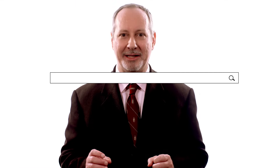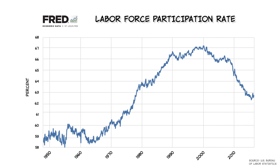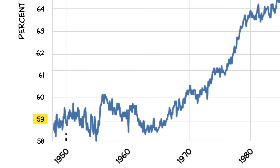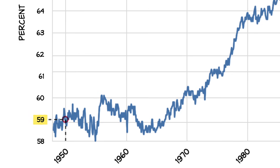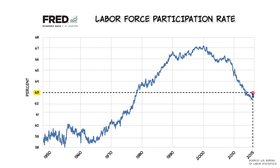If we Google 'labor force participation rate United States,' we'll find this graph from the St. Louis Federal Reserve. The labor force participation rate was about 59% in the 1950s — in other words, 59% of the adult population was in the labor force, either working or looking for a job. The participation rate then increased to 67% by 2000, before falling to 63% in 2015.